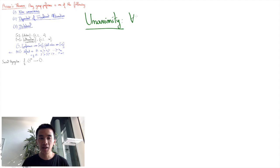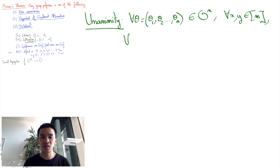to be unanimous when for all preference profiles Theta equals theta1 until thetaN such that according to thetaI, x is better than y. That is, electors unanimously prefer x to y. Then, the group preference f of theta must put x ahead of y. That is, the group prefers x to y.